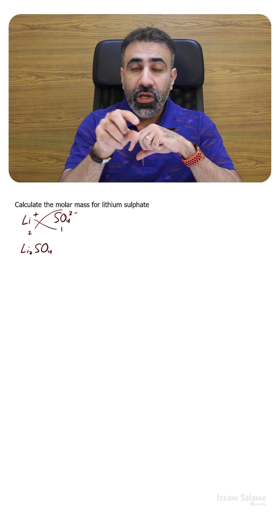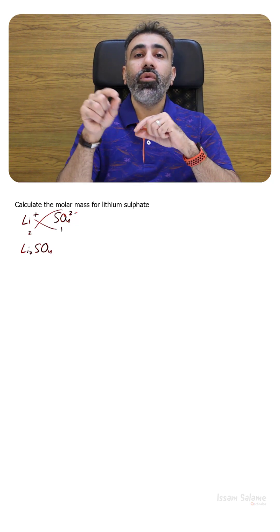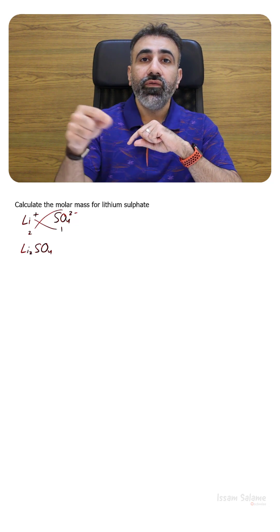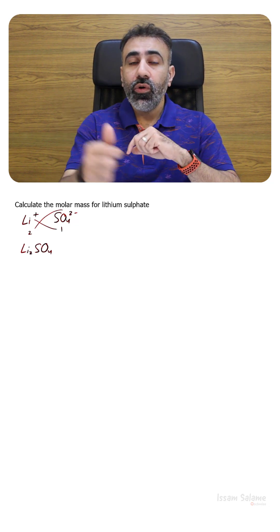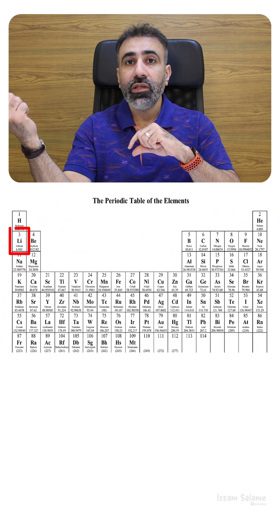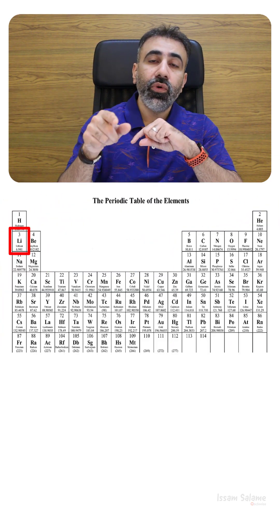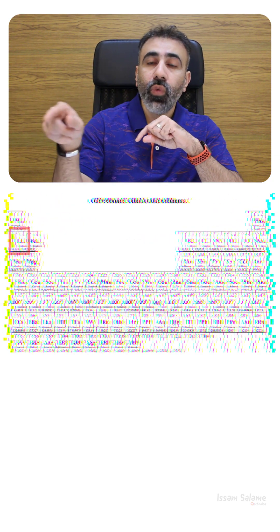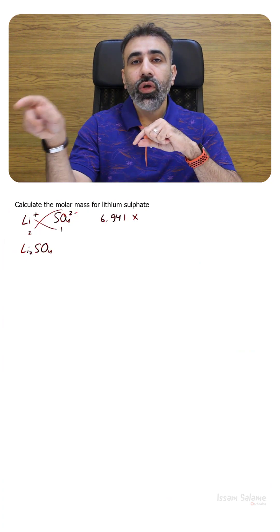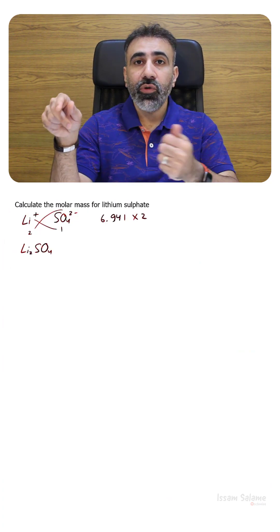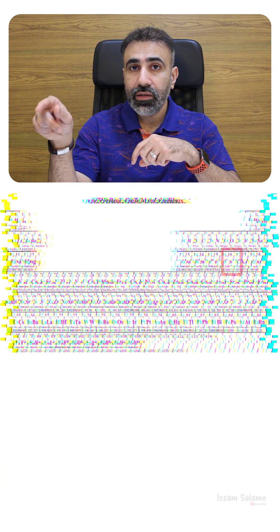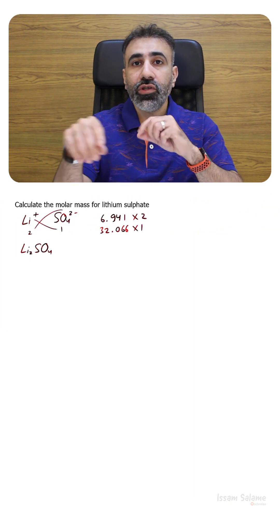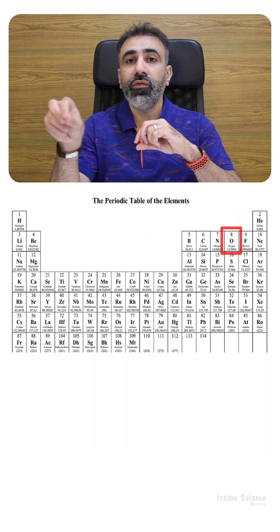To find the molar mass for lithium sulfate, we have to find the molar mass for the atoms forming it. We have two atoms of lithium — from the periodic table, the molar mass of lithium is 6.941, times 2. We have one atom of sulfur with a mass of 32.066. We have four atoms of oxygen, each with a mass of 15.994.